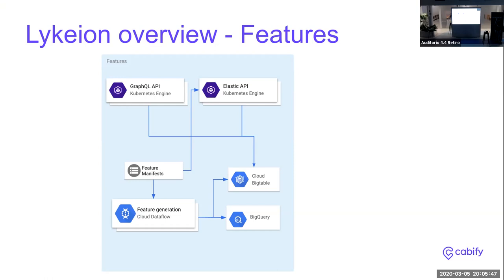The Apache Beam jobs compute features and store them in two storages. Cloud Bigtable is our operational database — a low-latency, highly scalable database managed by Google — used to expose features to other teams who can query them in real time in a matter of milliseconds. We also store features in BigQuery, which is our data warehouse where all data that Cabify generates is located. Data scientists can run queries, answer questions, perform experiments, and we use BigQuery as the source to train models.